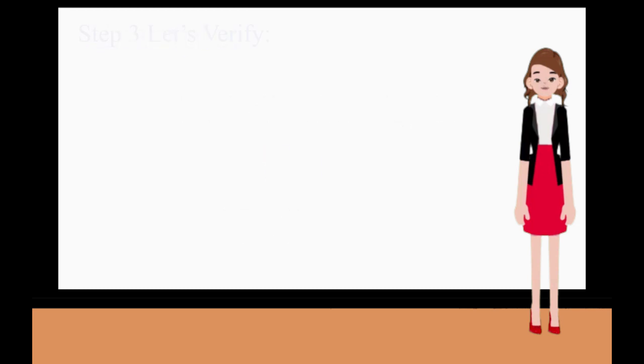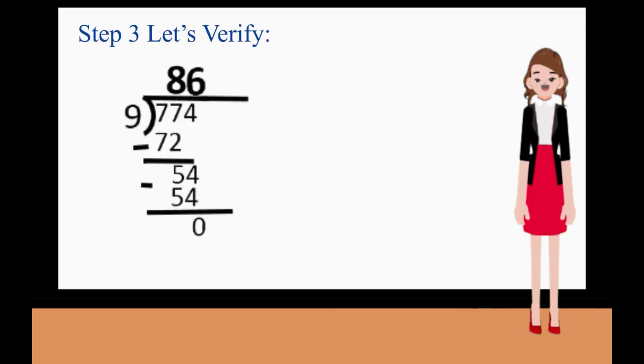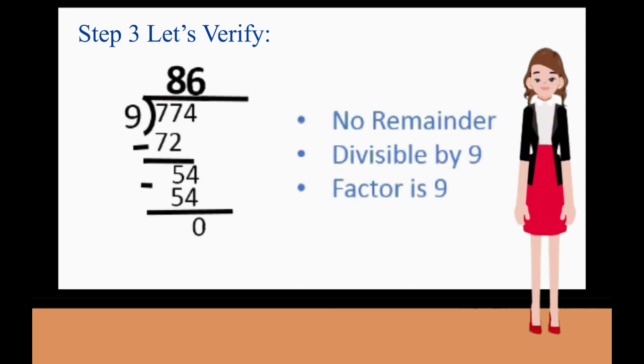Let's verify. 774 divided by 9 is equal to 86.